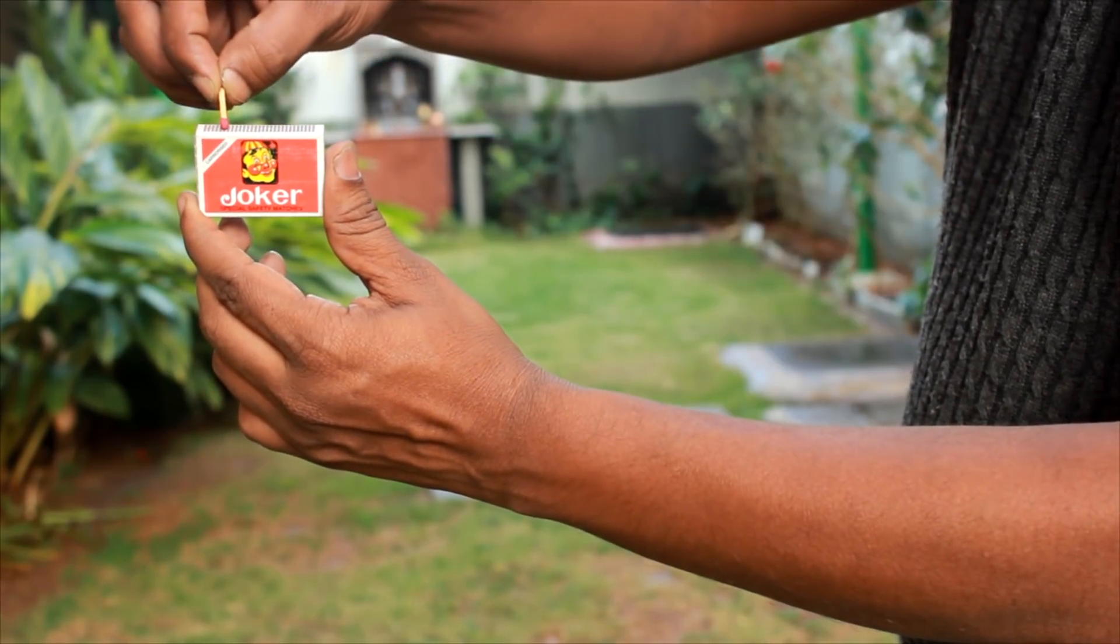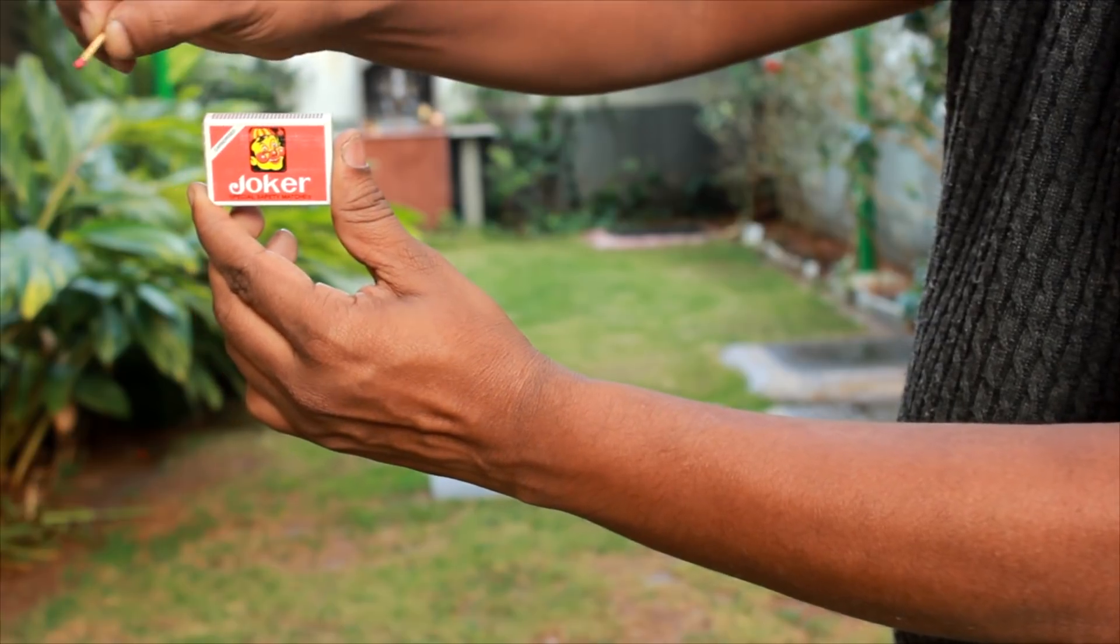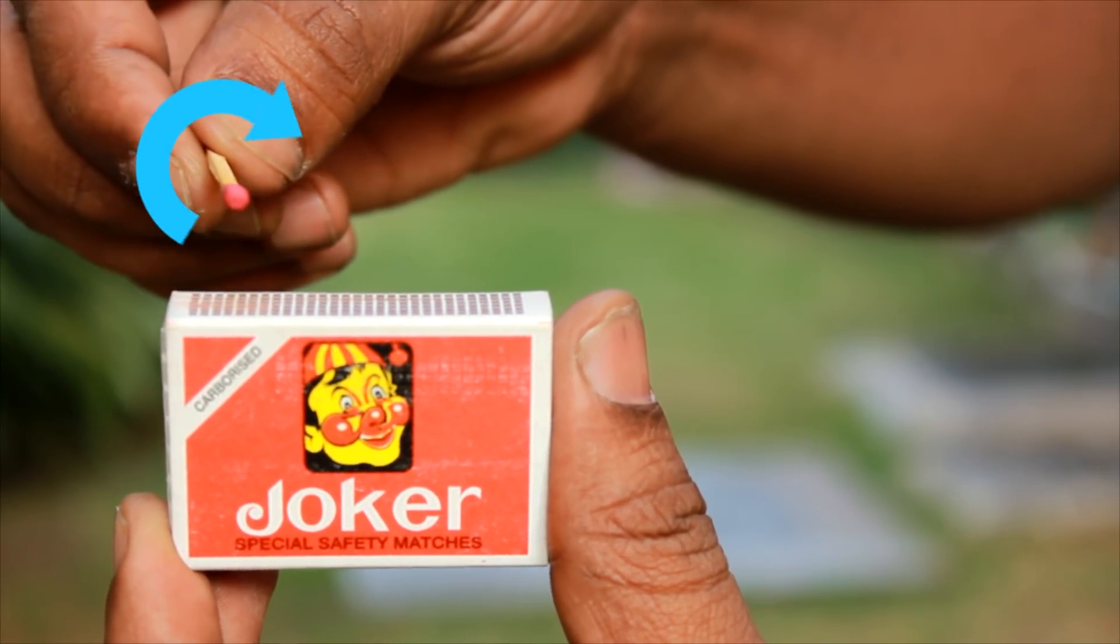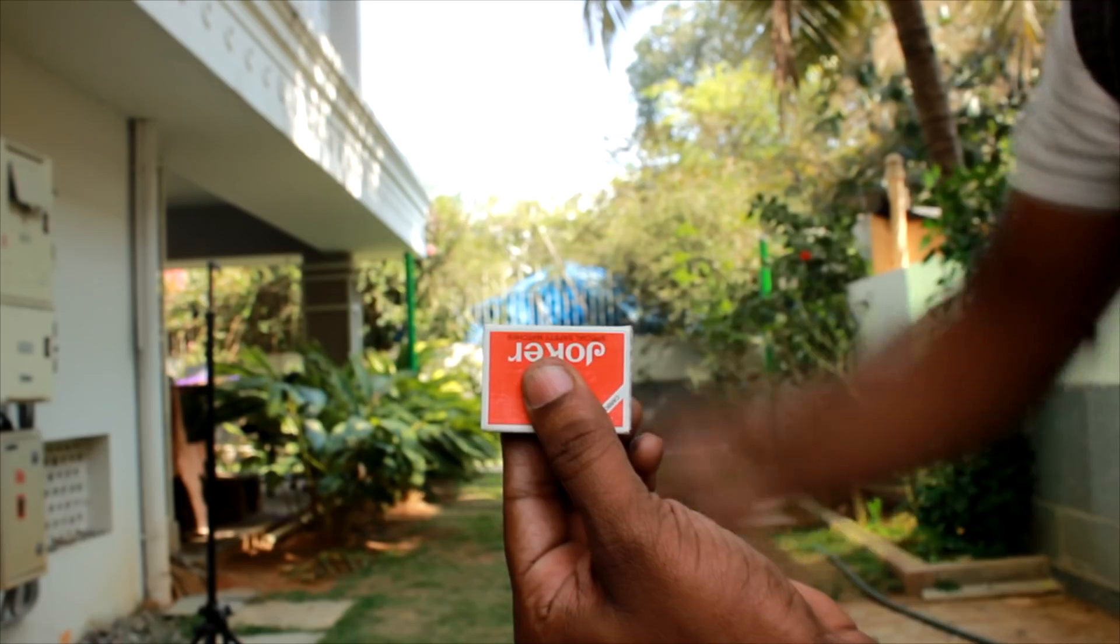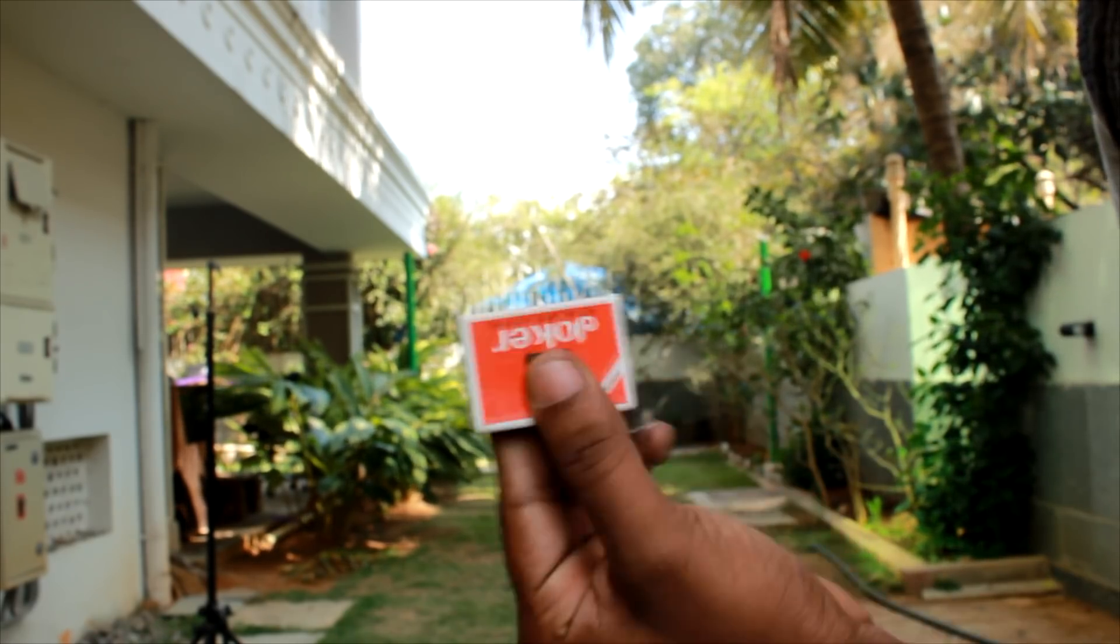The best way to light up is to keep the matchbox away from your body and strike it from an edge. If it doesn't light up on the first strike, protect the matchstick and do it again. You can also hold the matchbox this way and strike gently from the edge.